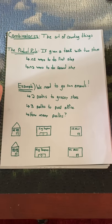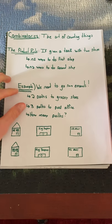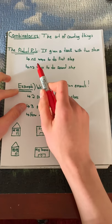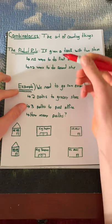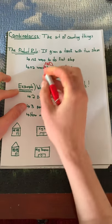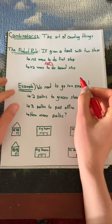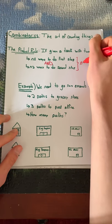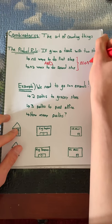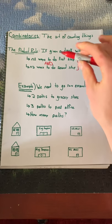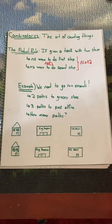First, the product rule. The product rule states that if we are given a task with two steps and there are n1 ways to do the first step and n2 ways to do the second step, in total there are n1 times n2 ways to do the task. Notice the keyword 'and' — when you see that keyword you're going to want to be thinking product rule.